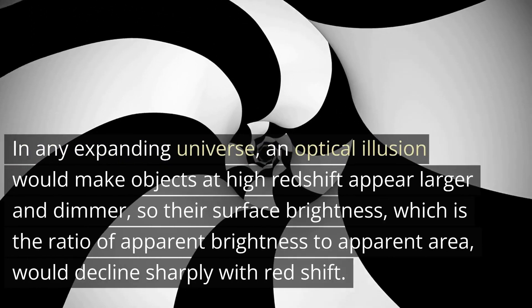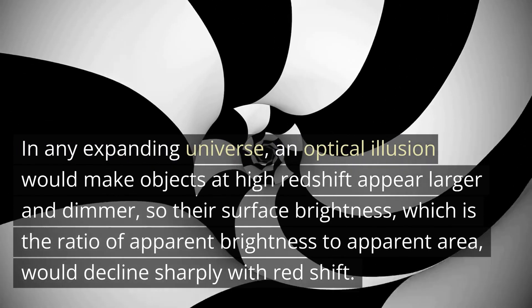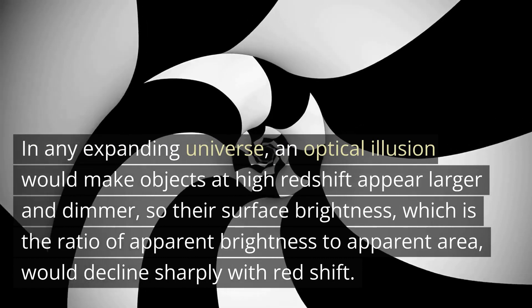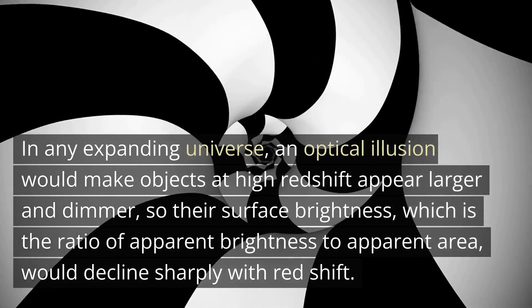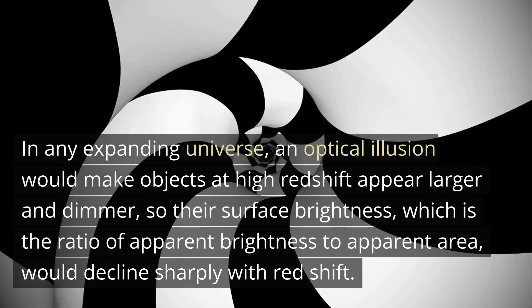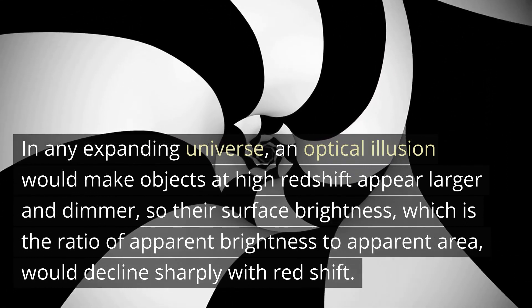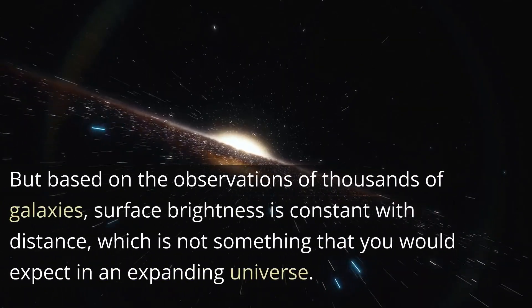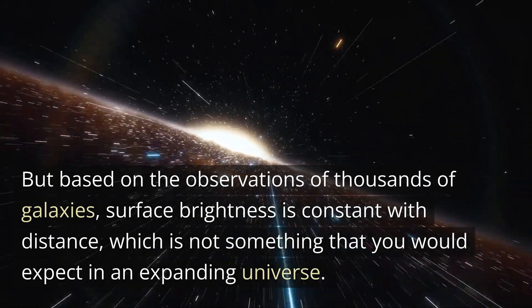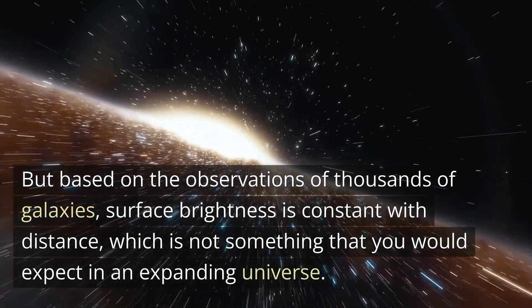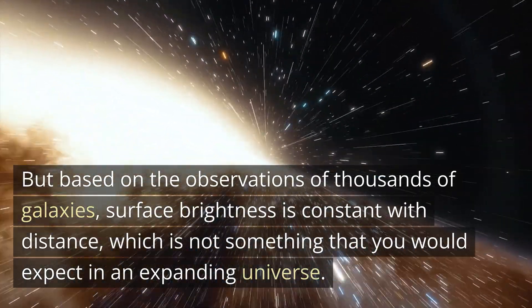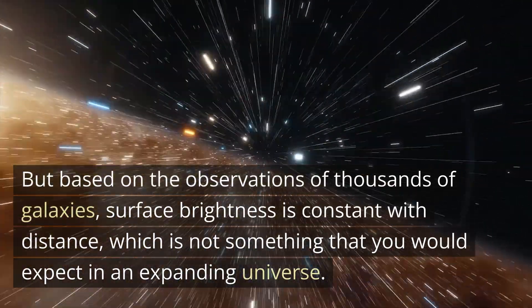In any expanding universe, an optical illusion would make objects at high redshift appear larger and dimmer, so their surface brightness, which is the ratio of apparent brightness to apparent area, would decline sharply with redshift. But based on the observations of thousands of galaxies, surface brightness is constant with distance, which is not something that you would expect in an expanding universe.